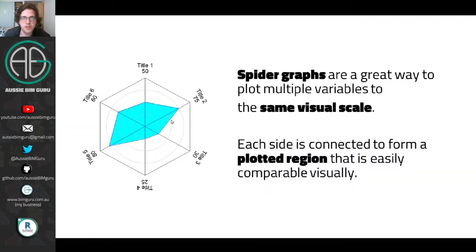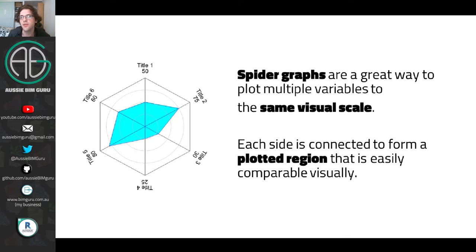So what is a spider graph? Well if you haven't seen these before, they're a great way to plot multiple variables in a design or a study and they work on the same visual scale. From the center to the edge is essentially like a percentage scale. So if you have something between zero and a million and something between zero and a thousand, you can plot these together within their own domains at the same visual scale. Each side is connected as a point and it forms a region which is really easy to visually compare between multiple spider graphs.